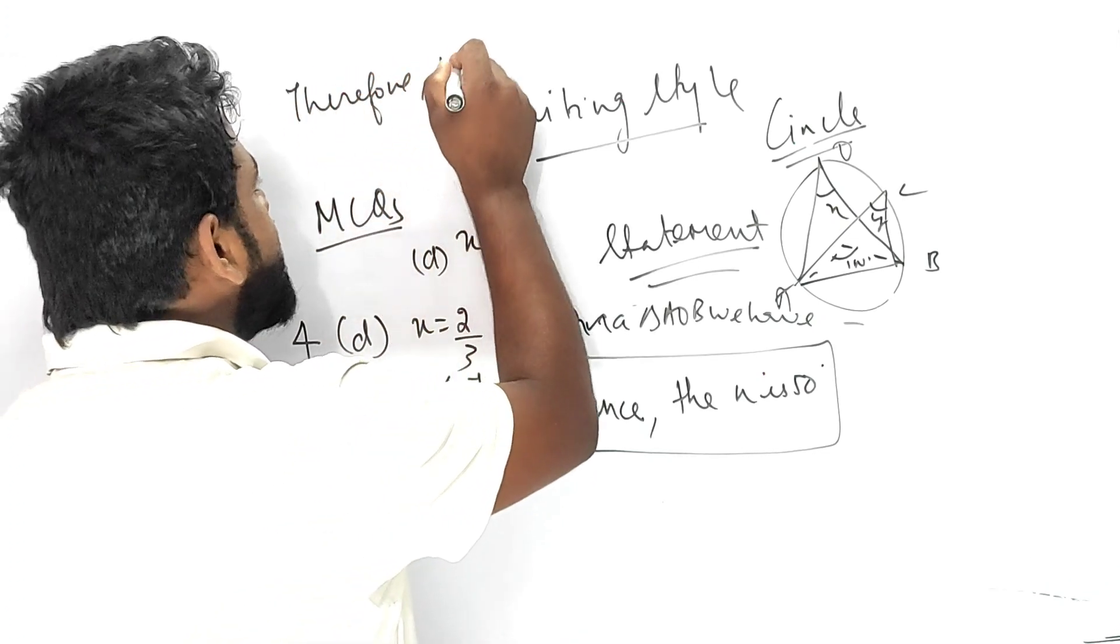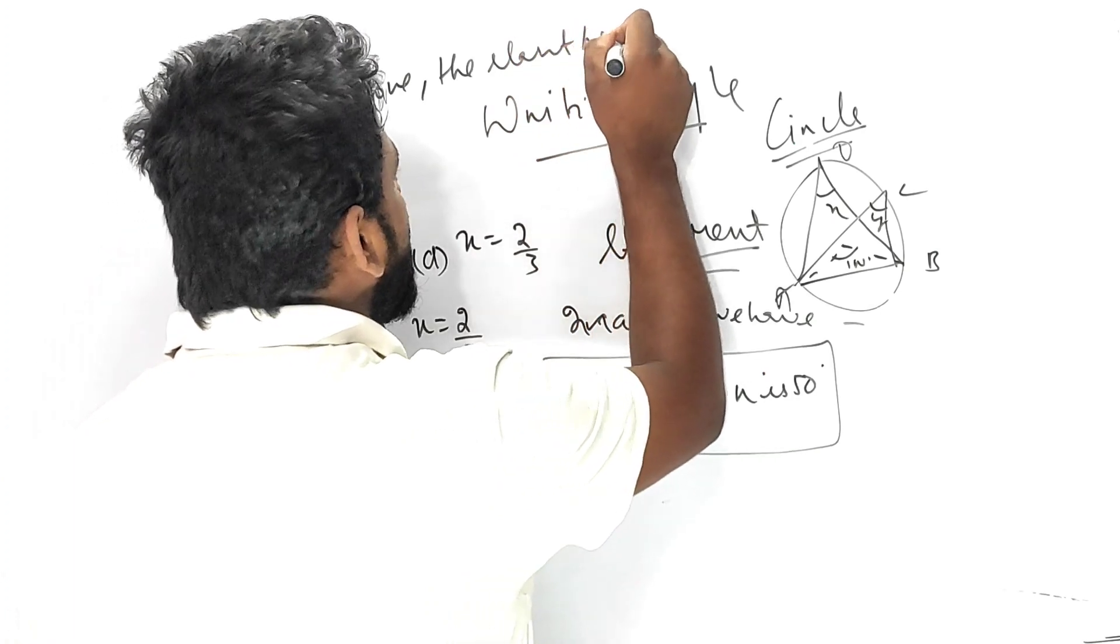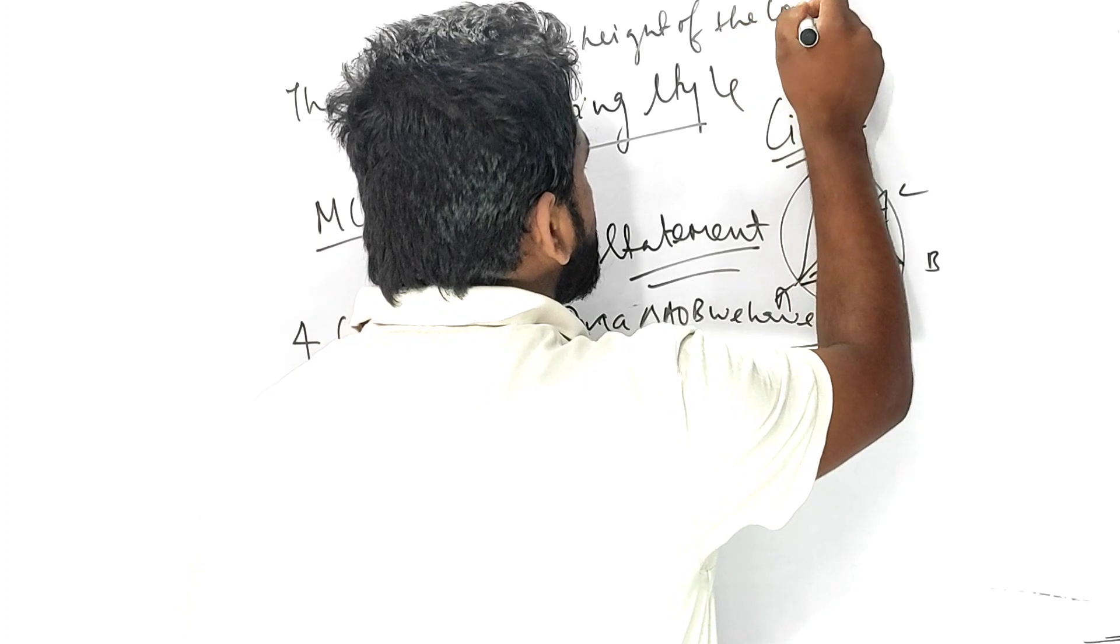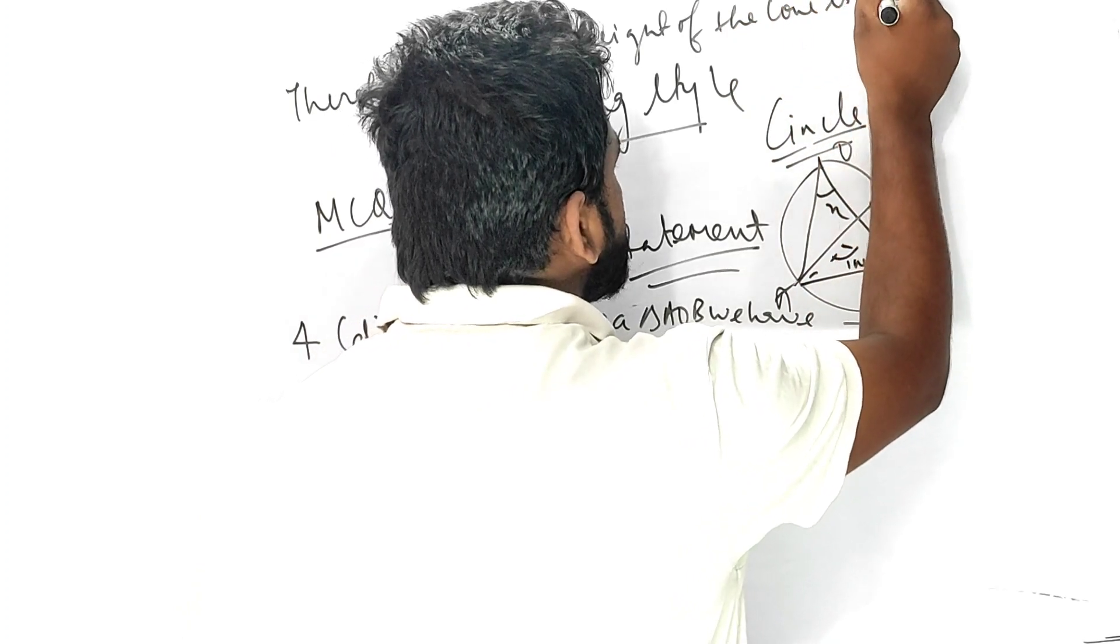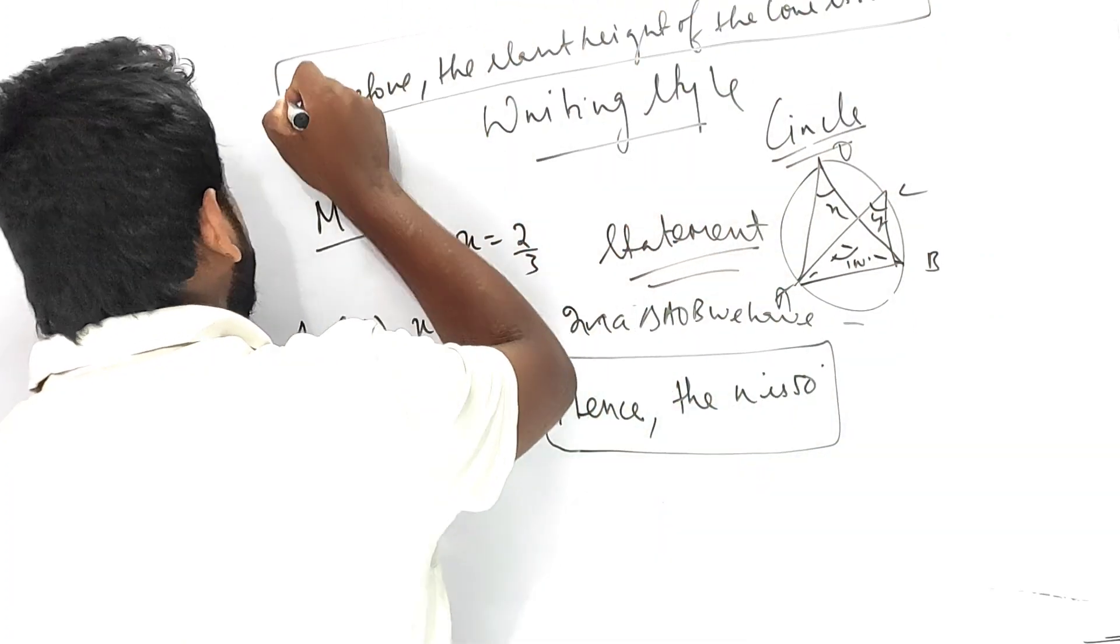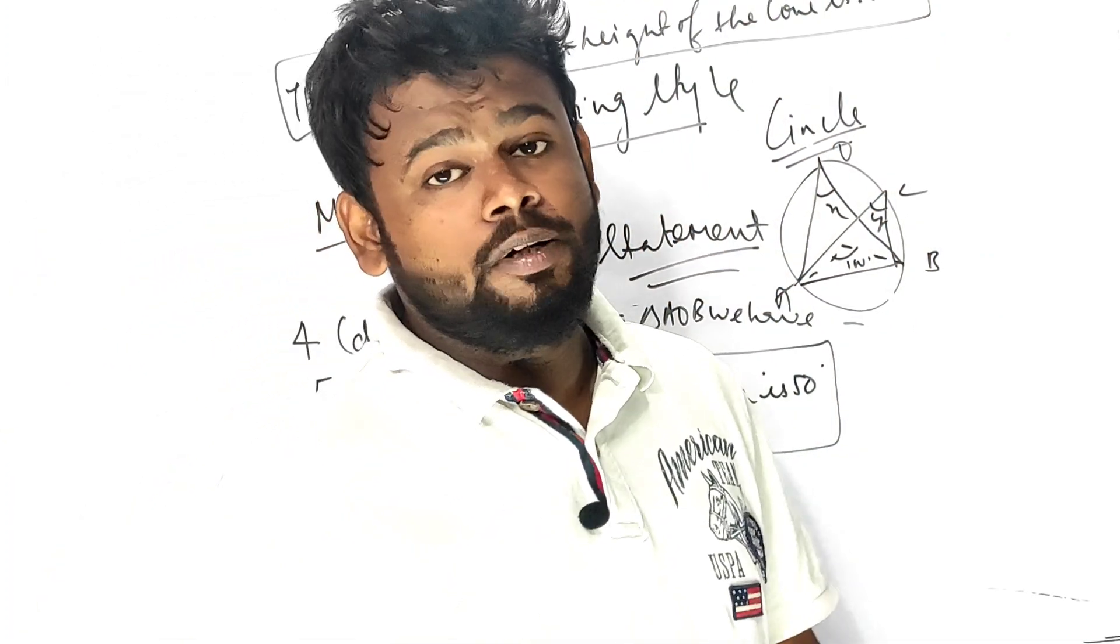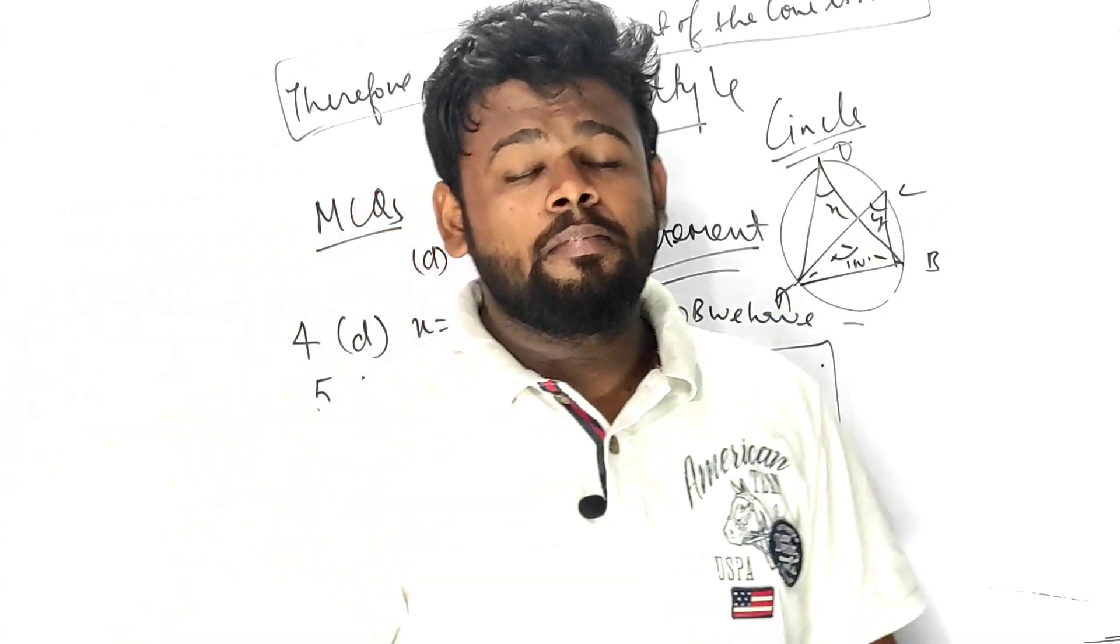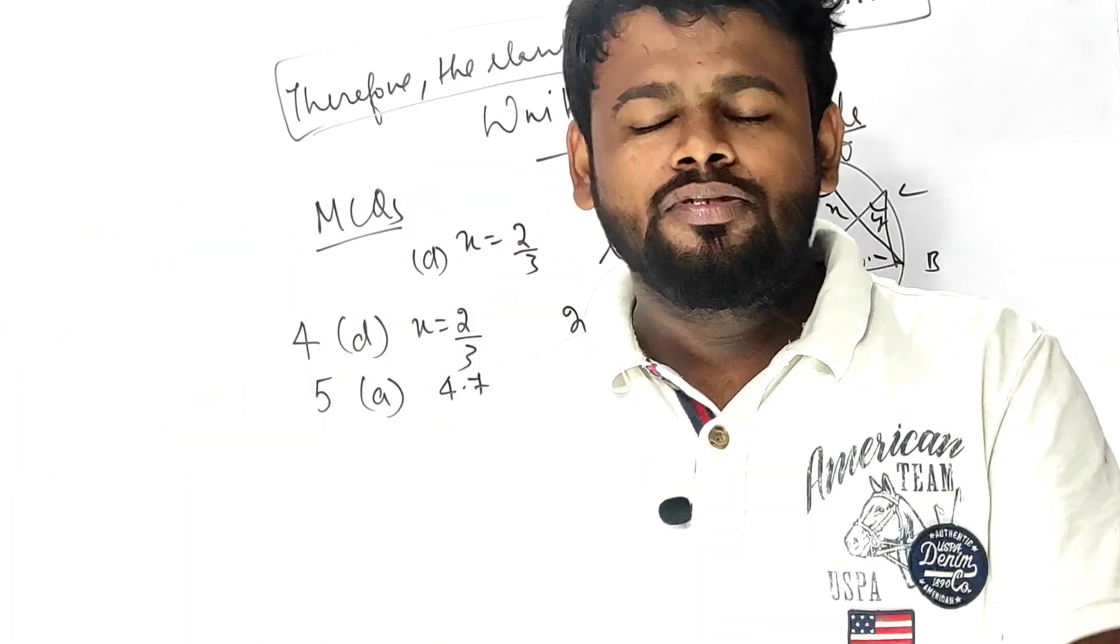Suppose the slant height is 50 centimeter. Therefore, the slant height of the cone is 50 meter. Make a box of it. Thank you very much people, this is all about the show. Do not forget to join the session in An Academy tomorrow, 7 PM, 7 AM sharp. Thank you, God bless you.